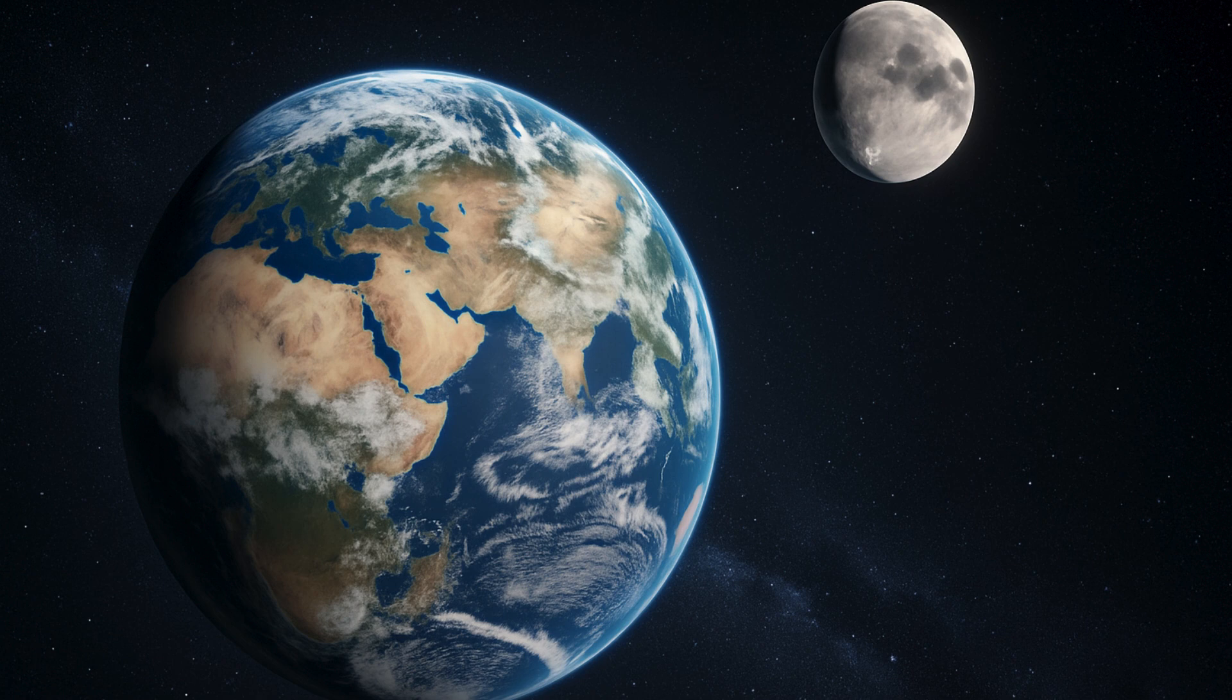It was found that the moon is going 3.82 centimeters away from earth every year. This will eventually lead to earth days extending to 25 hours after 200 million years.